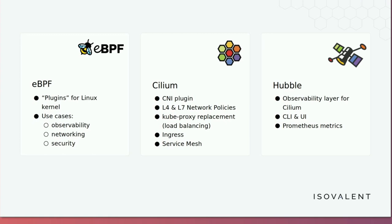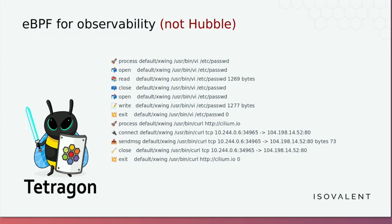One point before we get into Hubble details: eBPF is widely used for observability. The canonical use case is that there is an eBPF program that hooks into some event in the Linux kernel — it can be a syscall or many other things — it records what's happening and reports back to the user. There are multiple tools that do some variation of that. One of them is Tetragon, which focuses on security events — it's a security observability tool. Hubble is different: it uses eBPF for observability very indirectly. Hubble is a visibility layer for Cilium that basically piggybacks on what Cilium does.